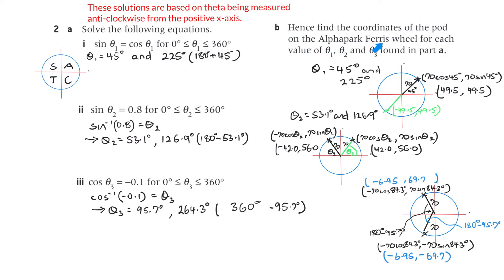B: hence find the coordinates of the pod on the Alpha Park Ferris wheel for each value of theta 1, theta 2, theta 3 found in part A. Theta 1 was 45 and 225 degrees. At 45 degrees, the x-value is 70 cosine 45 and the y-value is 70 sine 45. Because cosine 45 and sine 45 have the same value, the coordinate is (49.5, 49.5) metres. For 225 degrees, that's minus 49.5 for the x-value and also minus 49.5 for the y-value, so the coordinate is (−49.5, −49.5).